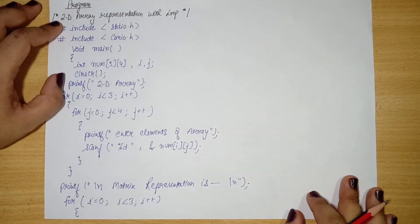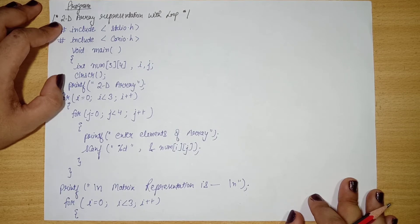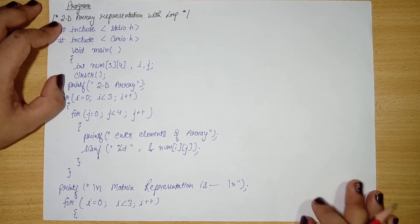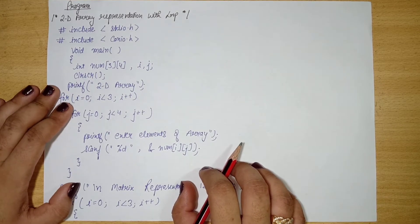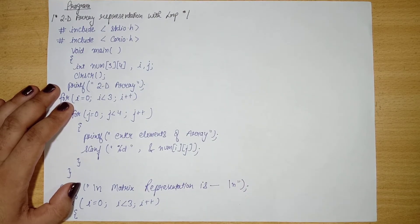During 2D array initialization, I told you that the data elements of a 2D array can be looped through. I will tell you a program that loops through and initializes the array. Whatever programs come related to matrices and arrays, I will make a separate lecture video. Let's talk about what we have done in the program — we have represented our array in matrix form.